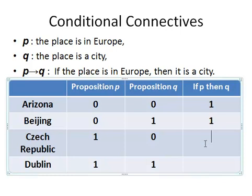This is the important one: the Czech Republic. The Czech Republic is a country in Europe but it is not a city. So for this particular example the compound statement is false. This is the example that makes the compound statement false — it is actually the zeros you are looking for in these truth tables.